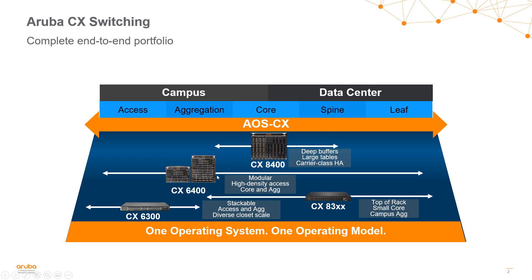The CX 6400 is a newer campus-focused aggregation-style high-density modular chassis that I'll talk about today. And then of course at the bottom we have the CX 8300 switch series, which is targeted for data center top-of-rack environments, as well as the 6300 series, which is a PoE access layer campus switch but also commonly used as an out-of-band switch in data centers.